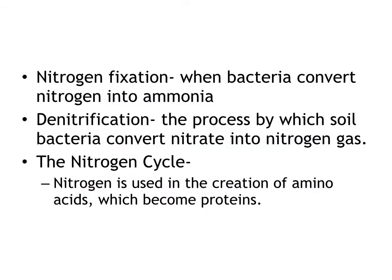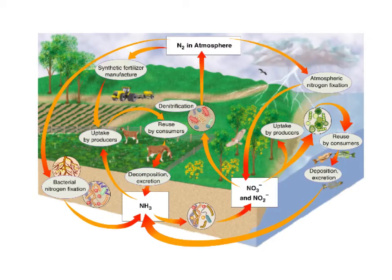Nitrogen fixation is when bacteria converts nitrogen into ammonia. Denitrification is when soil bacteria convert nitrate into nitrogen gas. In the nitrogen cycle, nitrogen is used in the creation of amino acids, which become proteins — so it's very important that nitrogen be cycled. Here's a diagram of the nitrogen cycle showing uptake, excretion, nitrification, and denitrification.